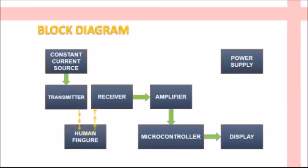Now we look at the block-level construction of the system. The block diagram consists of a constant current source which provides a constant current to the transmitter. The transmitter is a near-infrared LED which provides a constant intensity signal. The reflected rays are received at the receiver, whose signal intensity is very low. A signal conditioning circuit — an amplifier — makes the signal compatible with the microcontroller, which is the main processing unit. A display unit is used to present the final reading.